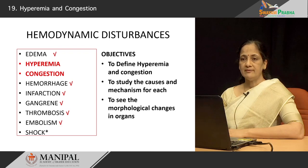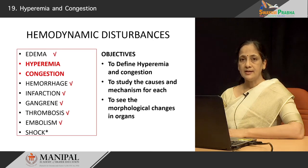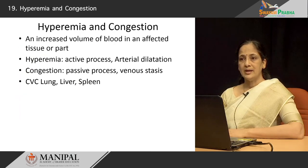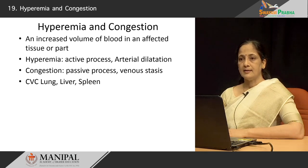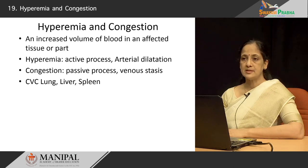We have now gone through hyperemia and congestion. We have seen that hyperemia is an active process caused by arteriolar dilatation, and congestion is a passive process caused by venous stagnation. We have seen that there are changes occurring in organs like the lung, liver, and spleen. In the lung, we see brown induration. In the liver, we see nutmeg appearance. And the spleen becomes markedly enlarged, resulting in hypersplenism.